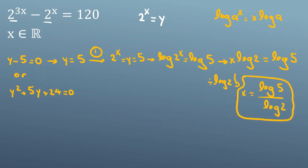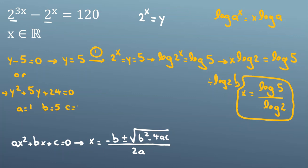Using the quadratic formula for y^2 + 5y + 24 = 0, our a = 1, b = 5, c = 24. The discriminant inside the square root is b^2 - 4ac.